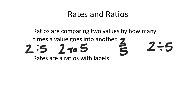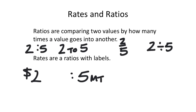Rates are actually just ratios with labels, so they're a bit more specific. For example, if the two represents dollars and the five represents minutes, then we have two dollars to five minutes — that's a rate because we have labels on the two values.